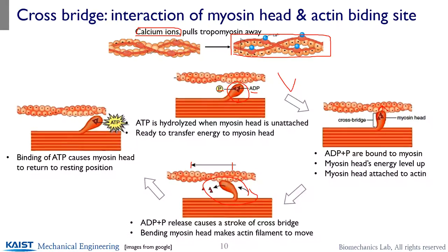Once the power stroke has occurred, there is release of ADP and P. A new ATP attaches to the myosin cross-bridge, and that detaches the cross-bridge between the myosin head and the actin. Now it's ready for the next stroke — the ATP is hydrolyzed to ADP and P, transferring energy to the cross-bridge head. The cross-bridge attaches to the actin binding site and performs the power stroke again. After spending all the energy, a new energy source attaches, causing detachment between actin and myosin. It keeps cycling, and those small cross-bridge movements add up to generate muscle force shortening and muscle forces.